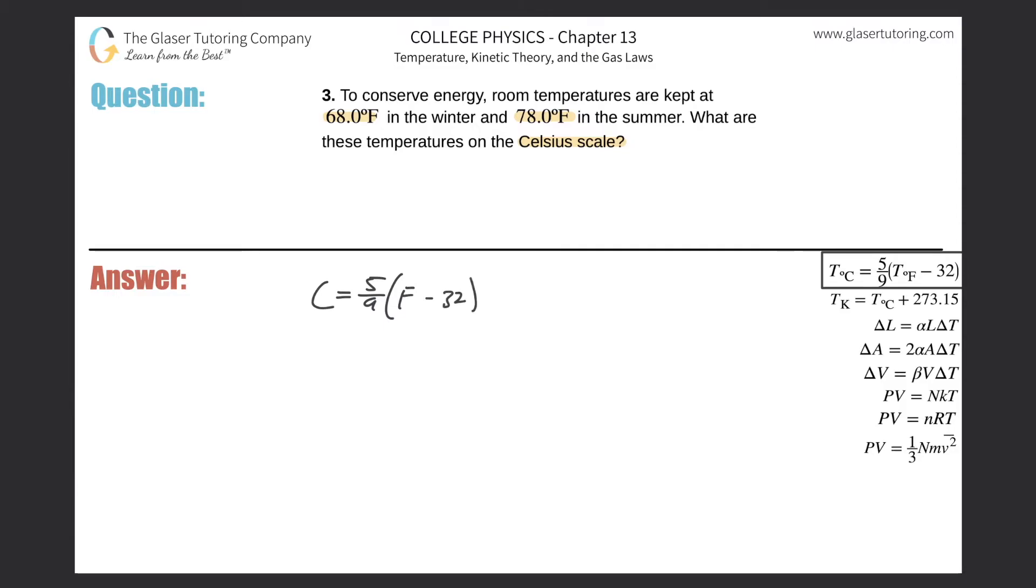So literally all we need to do to find the two Celsius temperatures is to plug in the two Fahrenheit values. We'll do the 78 first, and then I'll write the sister equation here to find the wintertime temperature, the 68, minus 32.